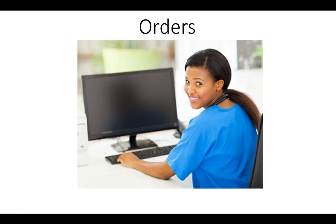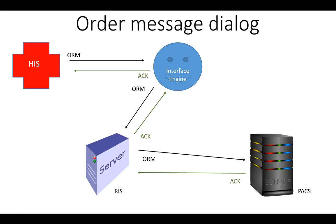After our patient is examined by the ER physician, she will place orders in the EMR. What matters to us is the CT head with contrast order. The ORM will get sent to the interface engine, which will validate the message structure, send an ACK back to the HIS, and then send the ORM on to the RIS. The RIS will add the accession number — this is very important, because the accession number is what the PACS uses to match up images from the modalities to the demographic information in the order. The RIS then sends the ORM including the accession number to the PACS, and the PACS answers back with an ACK.